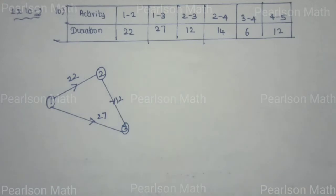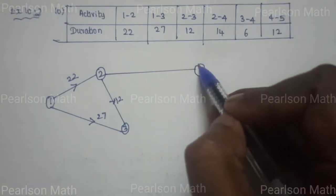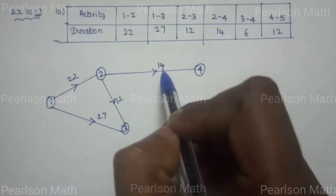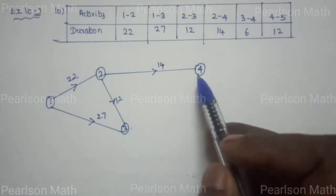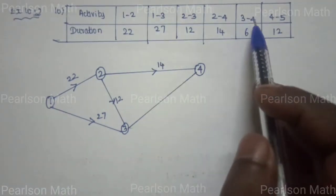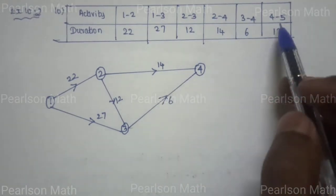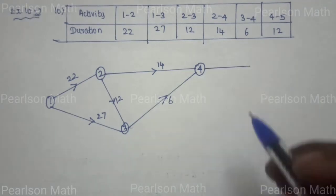Next, 2 to 4: line draw, duration is 14. Next, 3 to 4: line draw, duration is 6. Next, 4 to 5: line draw, duration is 12.